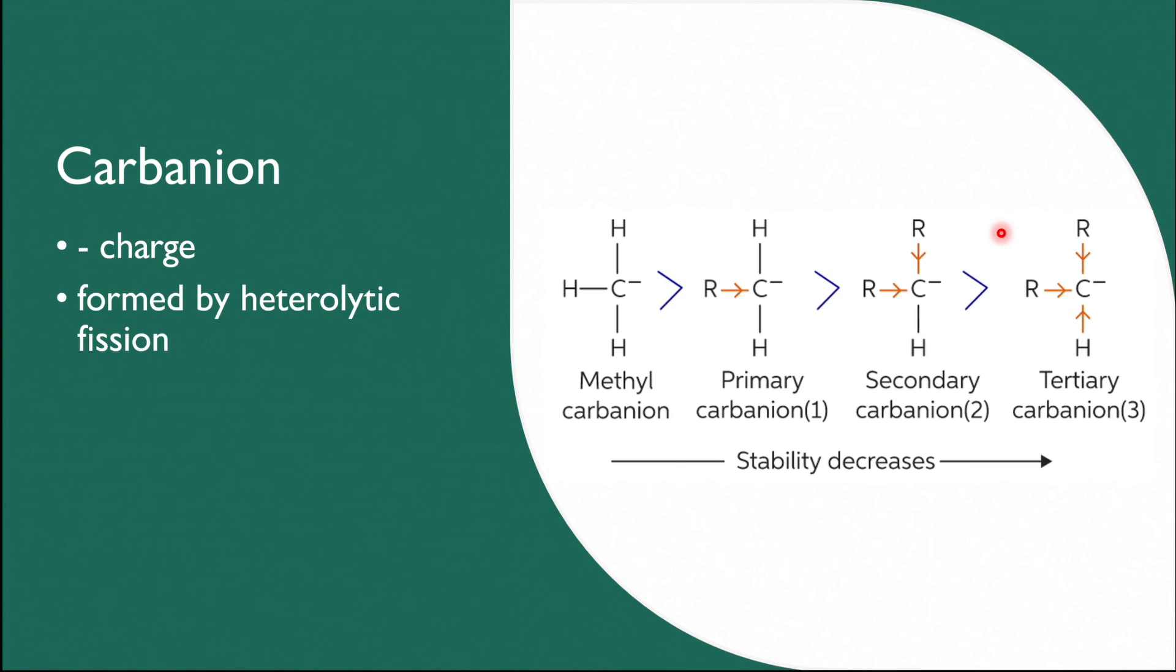When there is an alkyl group attached to a negatively charged carbanion, the alkyl group will push electrons to the negatively charged carbon. Due to this, the intensity of the negative charge at the carbanion increases.